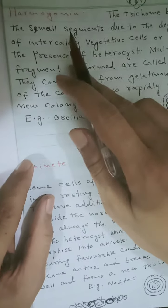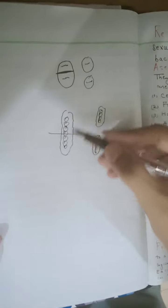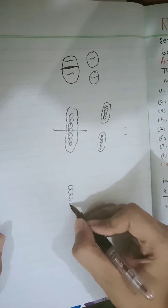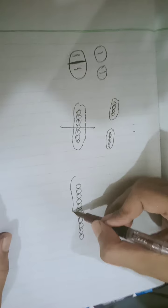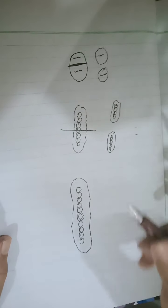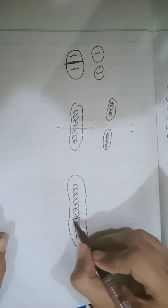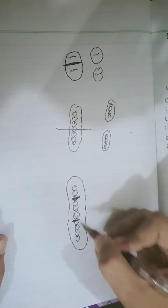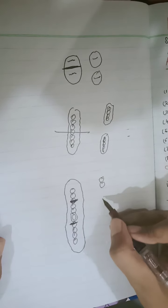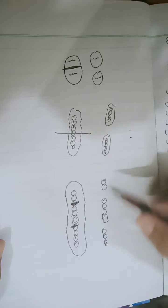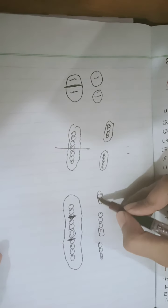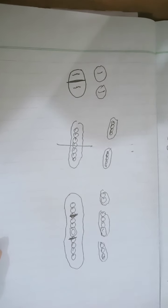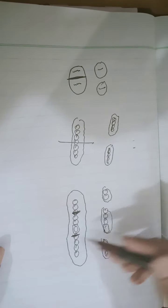The next method is hormogonia. In fragmentation the whole colony divides, but in hormogonia, the colony is a single row of cells called a trichome. This trichome breaks at a heterocyst or at a degenerate cell into small pieces. These small pieces of trichome are called hormogonia. Every hormogonia develops into a new colony.